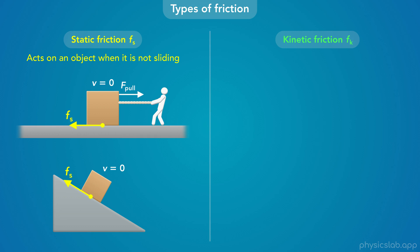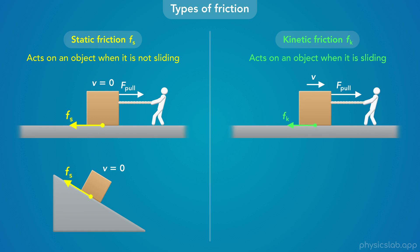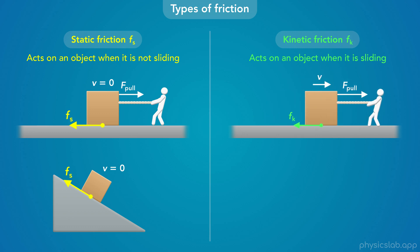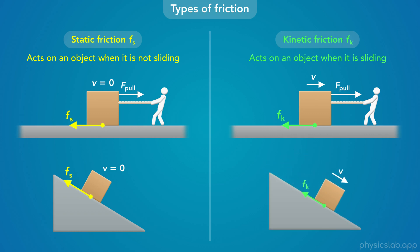On the other hand, kinetic friction acts on an object when it is sliding along a surface. So if you get this box to slide to the right, then the ground is now exerting a kinetic friction force on the box, not a static friction force. And if this box does slide down the incline, then the incline would be exerting a kinetic friction force on the box in the opposite direction as the velocity.